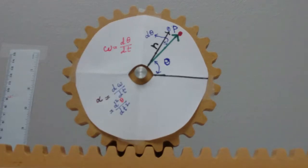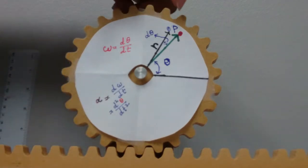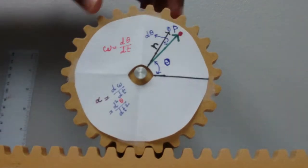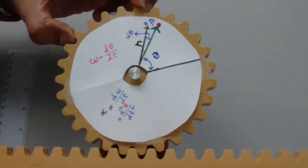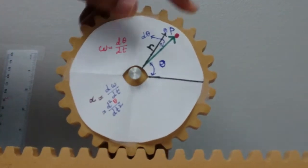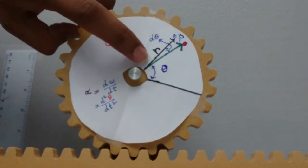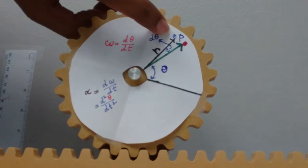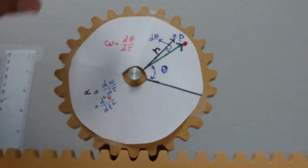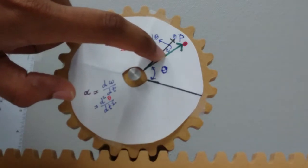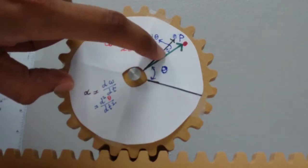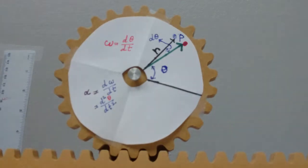Now, what is angular displacement? If you have point P and you rotate to a different position — from initial to a new point P — we place a second line here. The small change in the theta direction is called d theta, and this is the angular displacement.